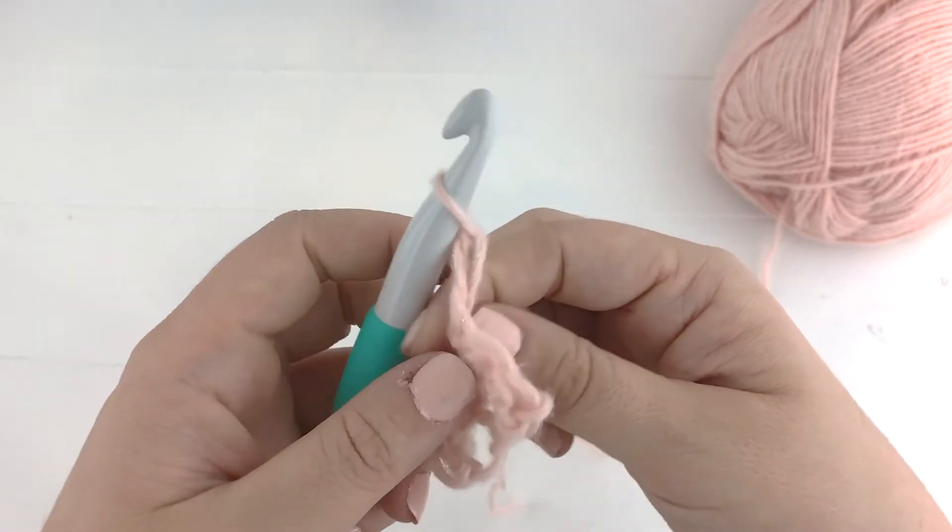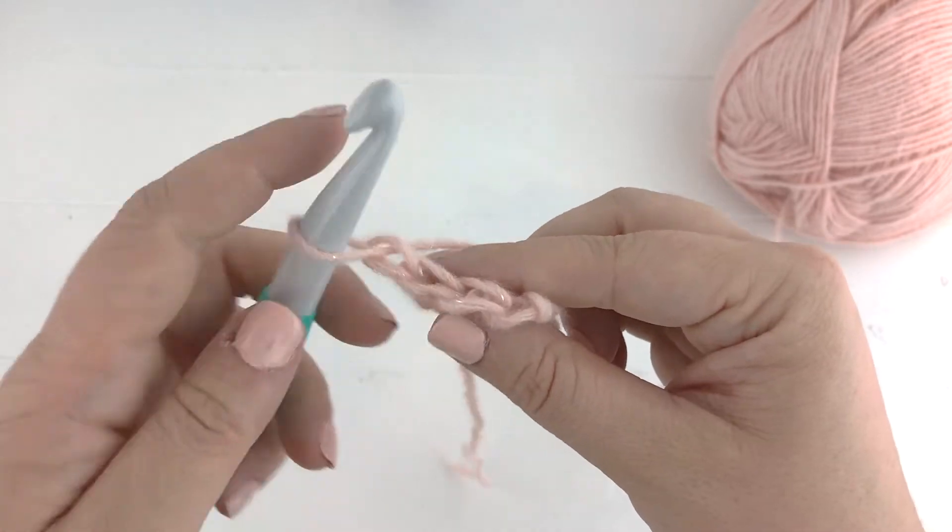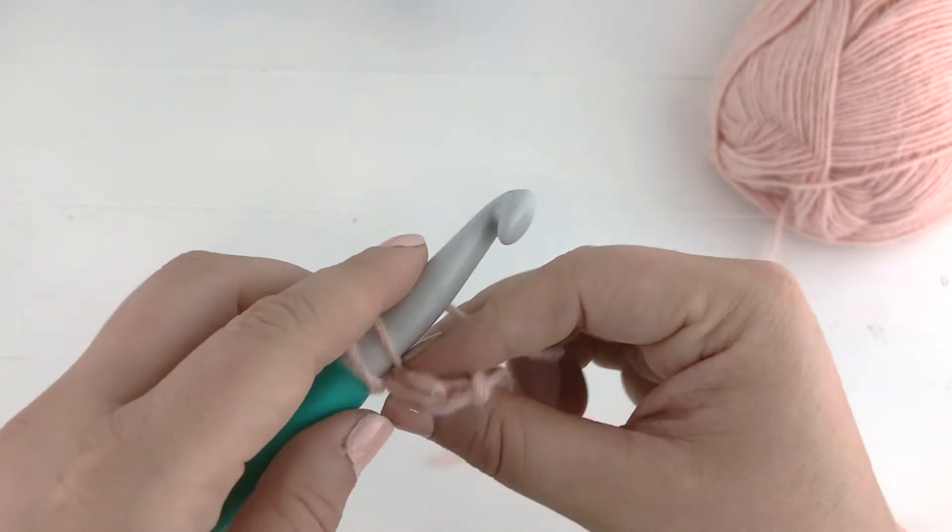Chain one and turn to start row four. For row four we are going to single crochet in the back loops only of every stitch across.